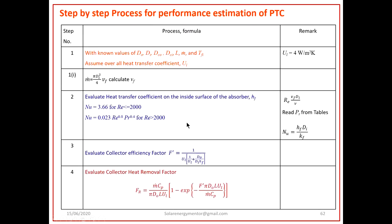The next step is to evaluate the collector efficiency factor F'. With UL assumed (4 W/m²K), and DO, DI, and Hf known, substitute into the F' expression to calculate it. Then, using F', estimate the collector heat removal factor FR, which requires M-dot, CP (specific heat of fluid), DO, L, UL, and F'. With all these known, FR can be computed.